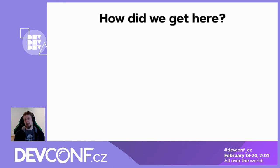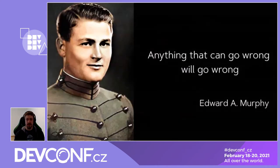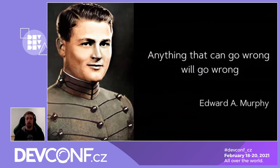But how did we get here? Modern systems are complex, and to test them well, we need to balance resources, time, and system complexity. And as practice shows, with all the trade-offs, Murphy's Law works — anything that can go wrong, will go wrong.